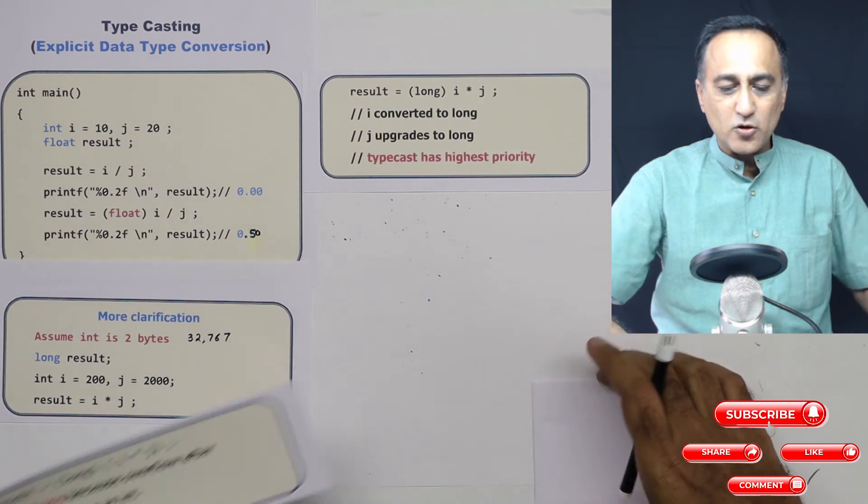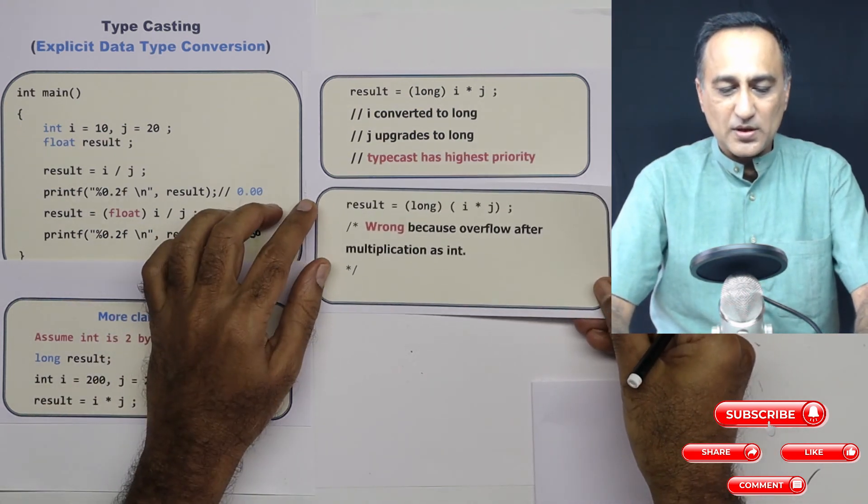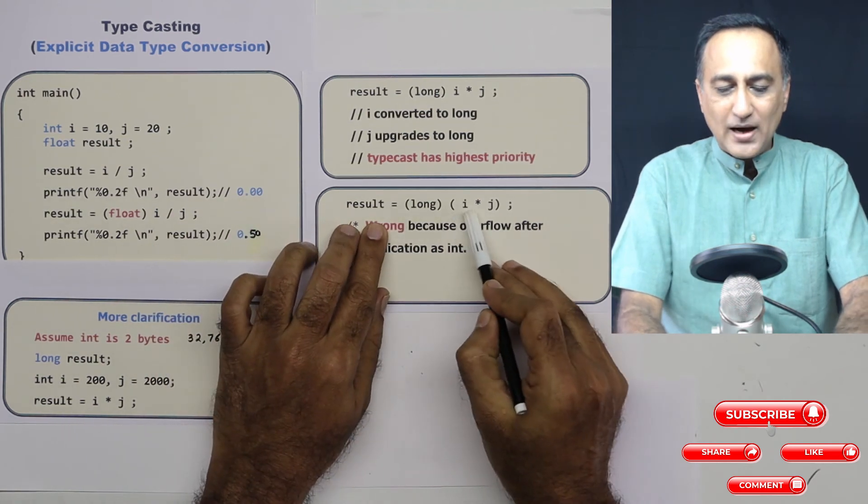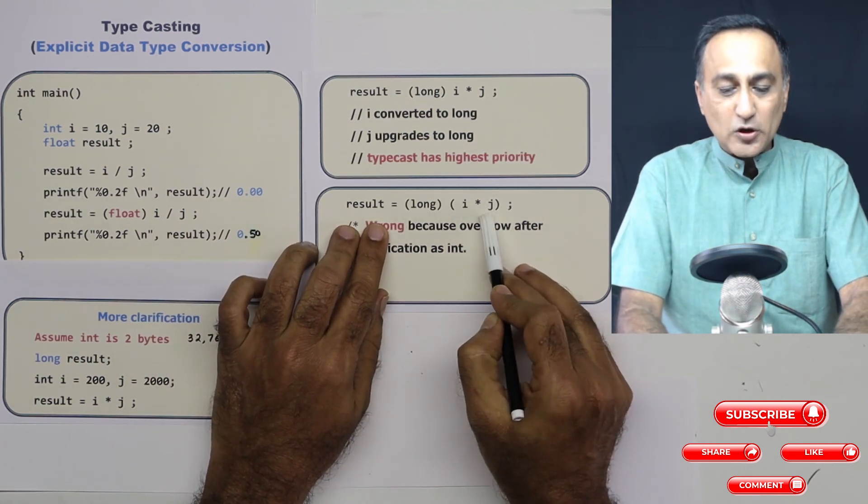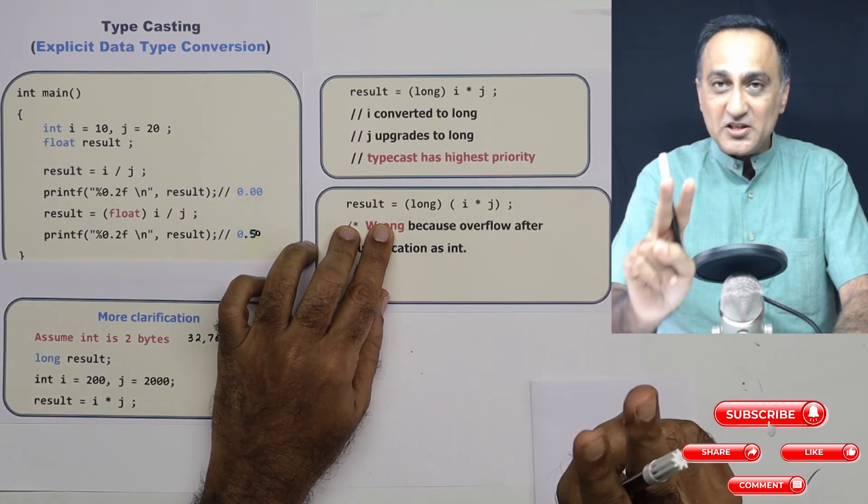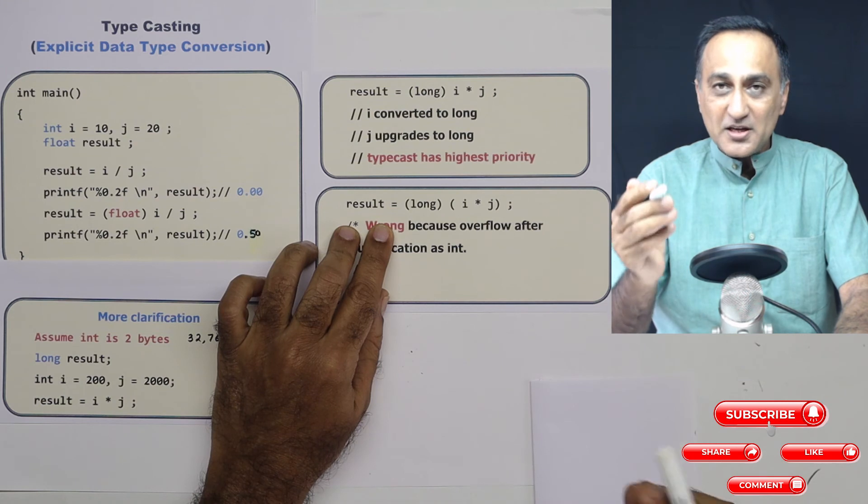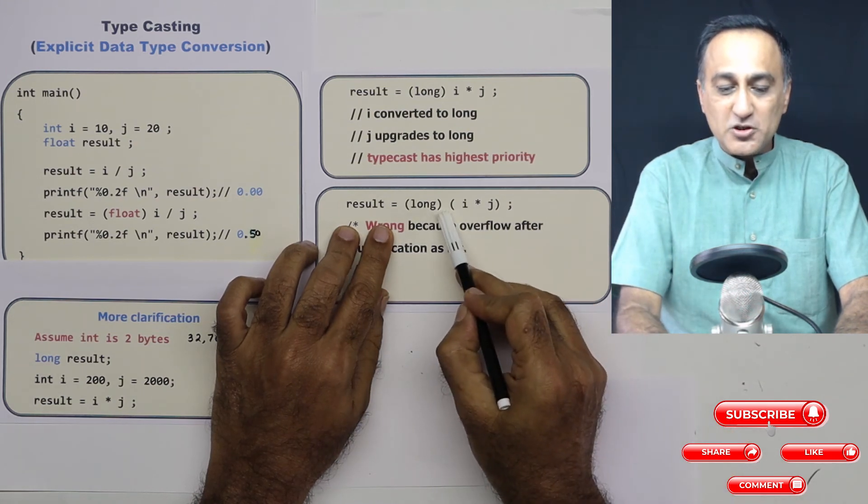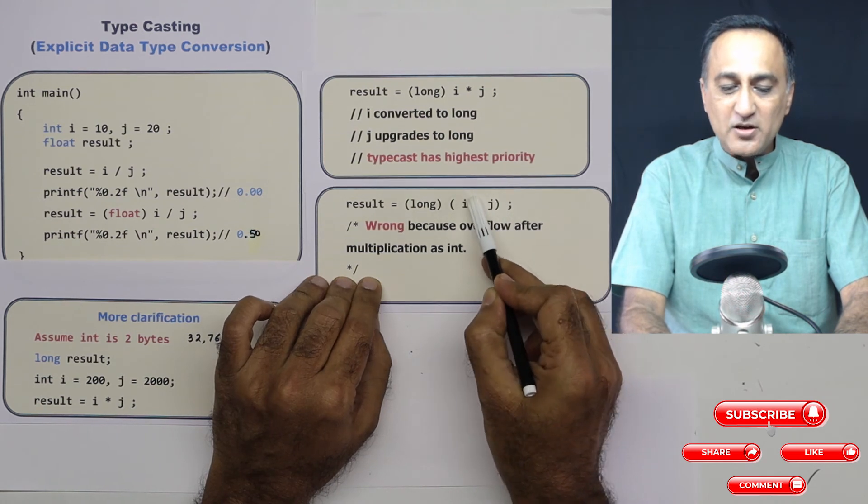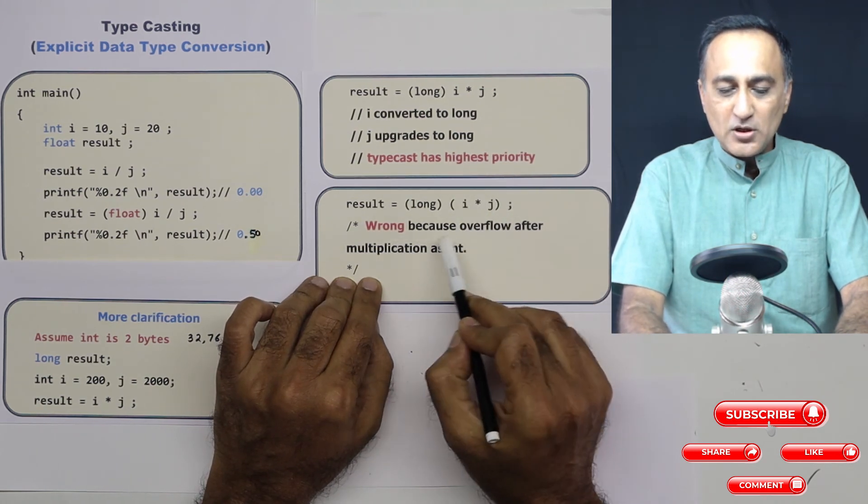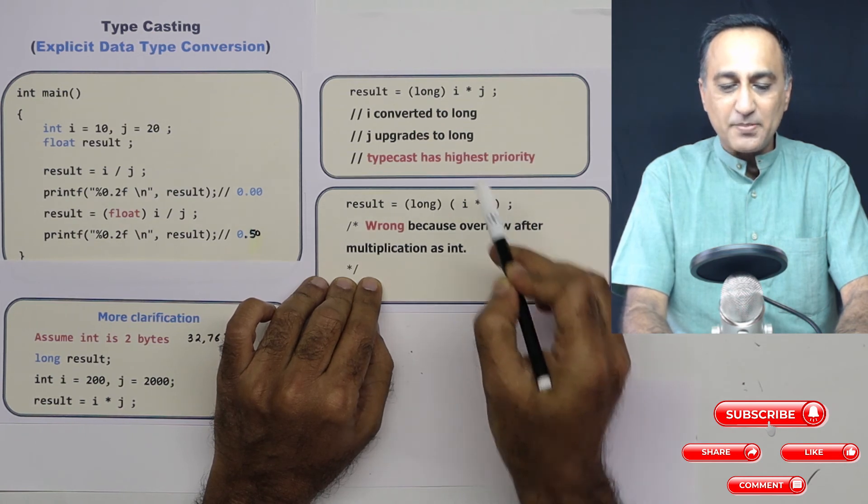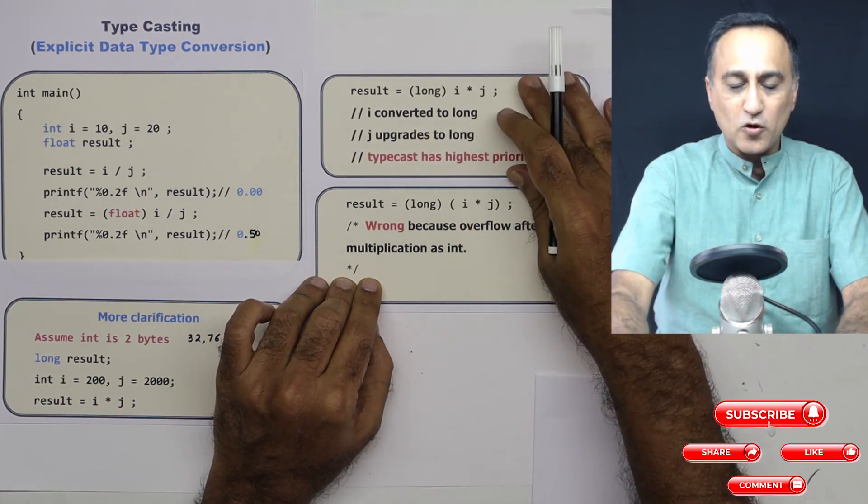Now just to see that you don't make a mistake, look at the next one here. Now I'm saying result is equal to long i into j. This is not correct because in the bracket, the multiplication has already happened between two integers. Once the multiplication happened as integers, you trying to change it to long makes no difference because the overflow has already been caused. So it is wrong because the overflow after the multiplication has happened. So this is the right way, this is the wrong way.